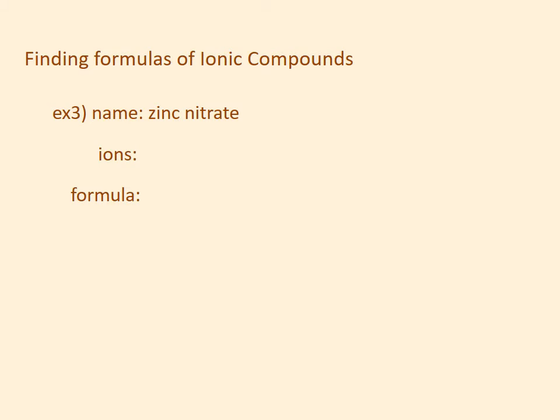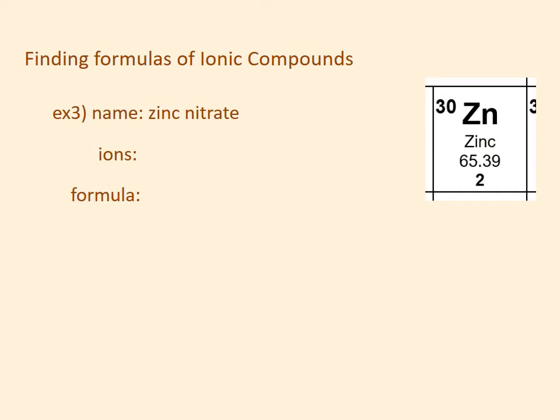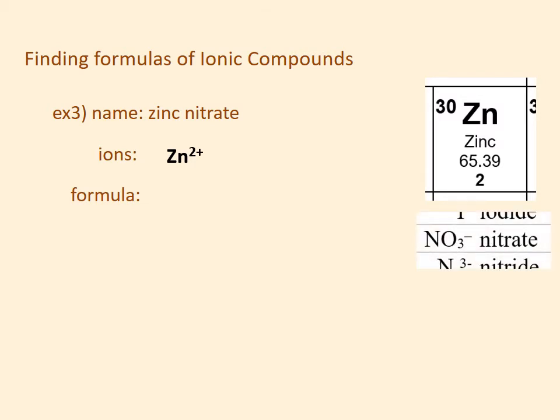Example 3: zinc nitrate. I'm not given a Roman numeral for zinc because zinc only has one charge option, so I have to look it up on the periodic table. The symbol for zinc is Zn and it takes a plus 2 charge. I look up nitrate on the common negative ions — that's NO₃ minus. So I have a plus 2 and a minus 1. The lowest common multiple is 2, so to get a plus 2 on the front I need 1 zinc, and to get a minus 2 on the back I will need 2 nitrates.